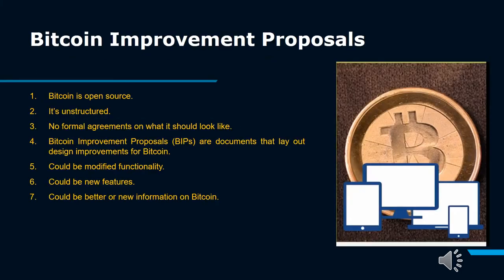Bitcoin Improvement Proposals. As we know, Bitcoin is open source and unstructured. No formal agreements are there which could say what it should look like. Bitcoin Improvement Proposals are documents that lay out design improvements for Bitcoin. The Bitcoin community is working on improvements so Bitcoin can also be modified in functionality, having new features or better information on Bitcoin.